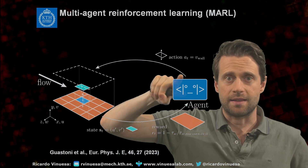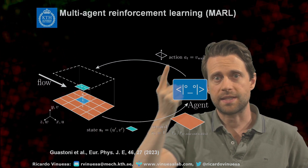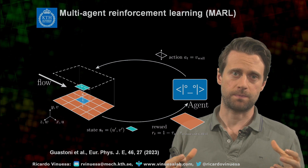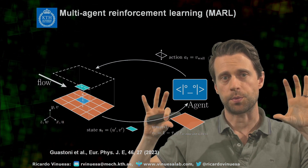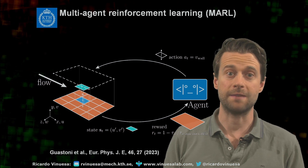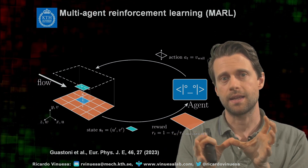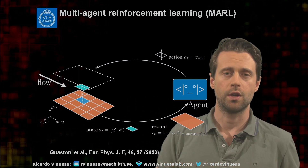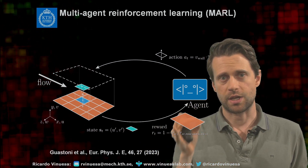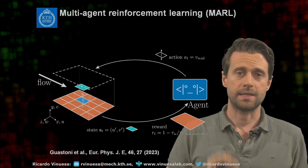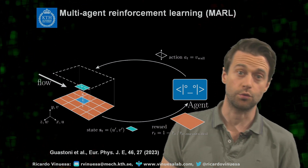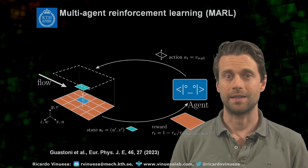The agent decides the action applied at the wall — a wall-normal velocity that can be positive (blowing) or negative (suction). All independent agents observe different parts of the flow; because the flow is periodic in the streamwise and spanwise directions, each pseudo-environment can optimize collectively toward a common goal of minimizing overall drag. This setup has led to very promising results in a turbulent channel at a friction Reynolds number of 180 — low Reynolds number, but turbulent — showing significant potential for flow control.